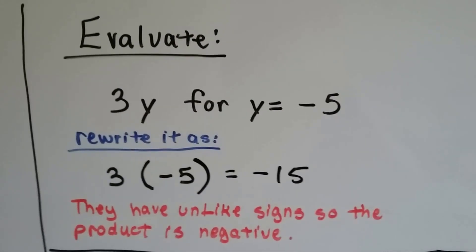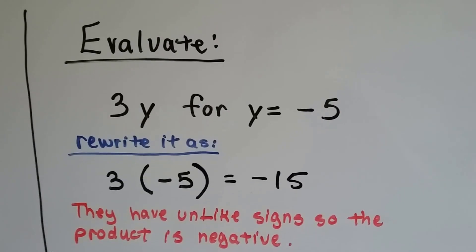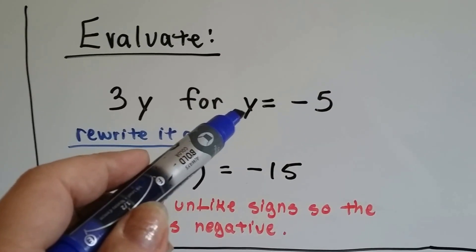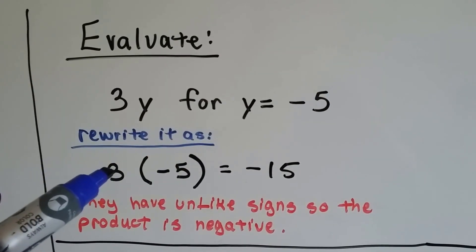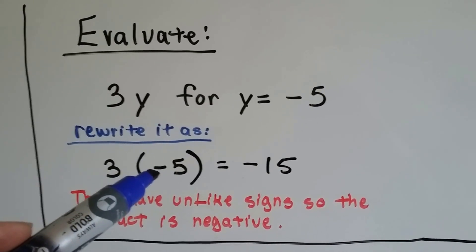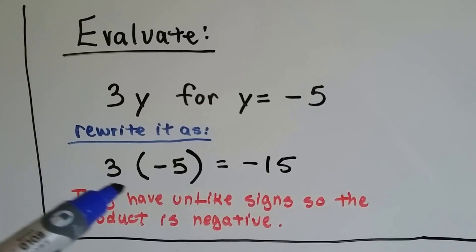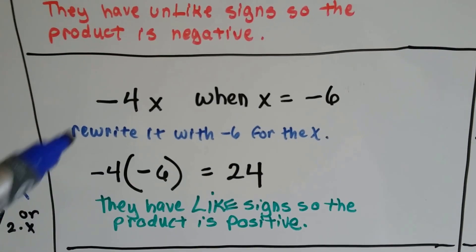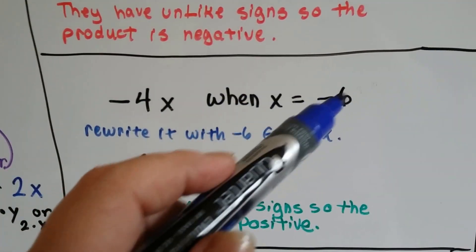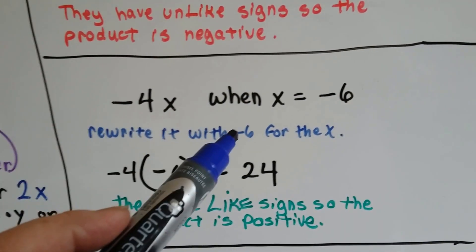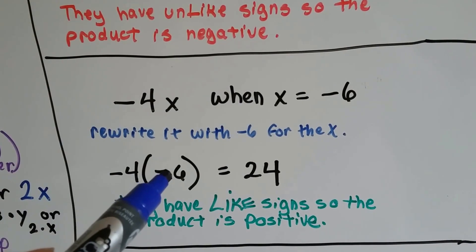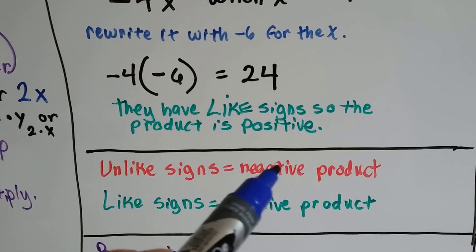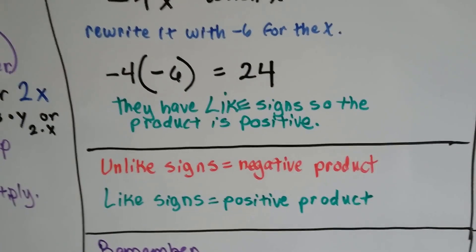When we see an equation like 3y for y equals negative five, we just rewrite it and put negative five in place of the y. The y is the variable, so now we have three multiplied by negative five. They have unlike signs — positive three and negative five — so our answer is going to be negative 15. Here's another one: negative 4x when x equals negative six. We rewrite it as negative four times negative six. They have like signs, so the answer is positive 24. Remember: unlike signs gives a negative product, and like signs gives a positive product.